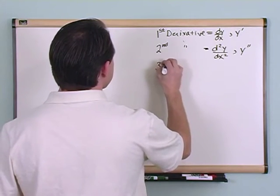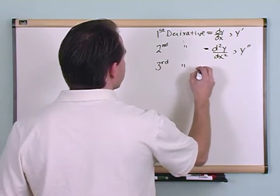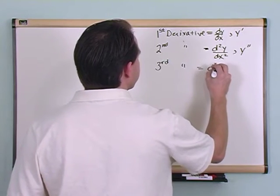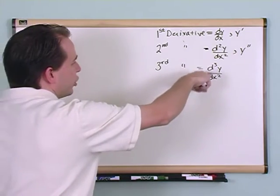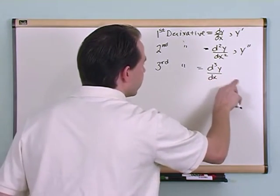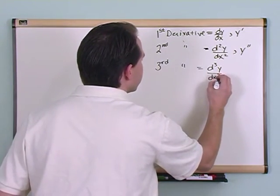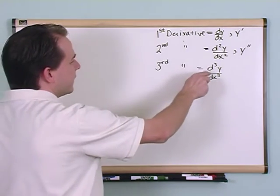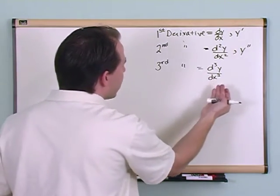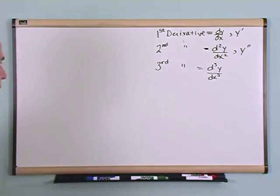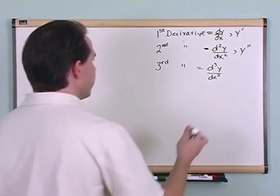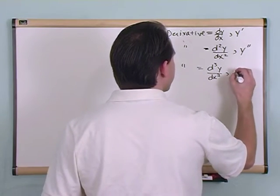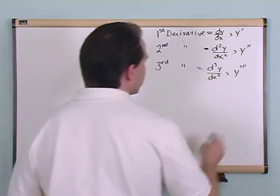The third derivative can be written, as you might guess, d3y over dx cubed, and again, these aren't cubes and squares. This doesn't mean dx to the third power, this is just a reminder to the person that's writing the problem that this is a third derivative, so this is not an exponential. And you can write that as y with three little marks.